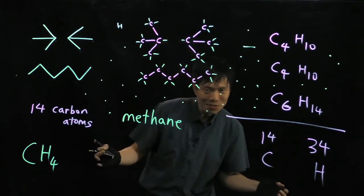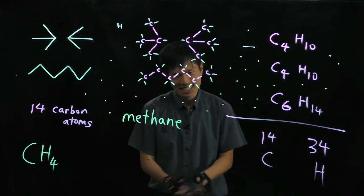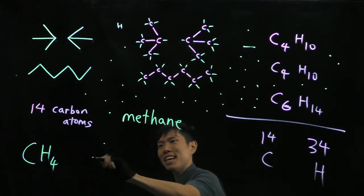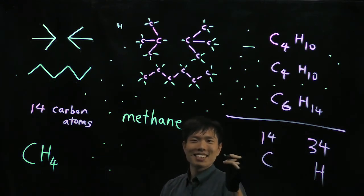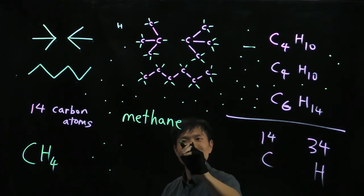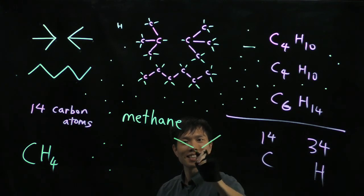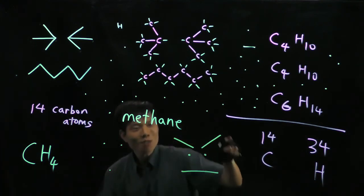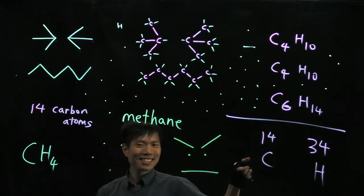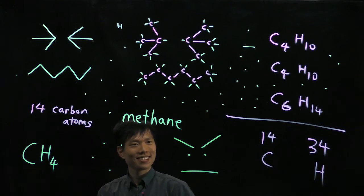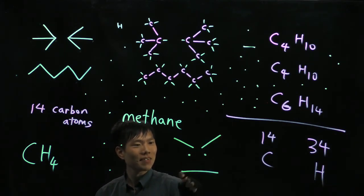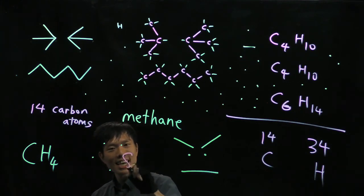The final exercise for today: in this structure here, how many carbon atoms do you see? That's very easy: 1, 2, 3, 4, 5, 6, 7, 8. That's 8 carbons.